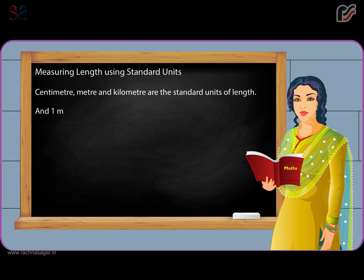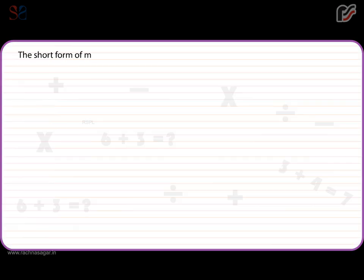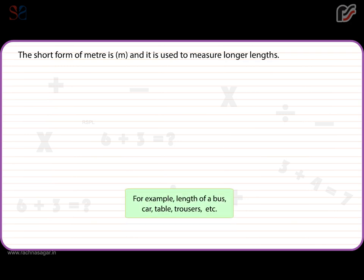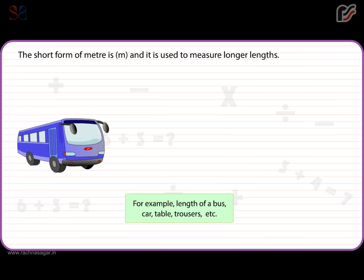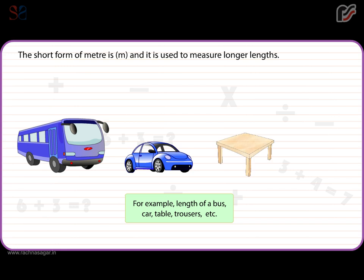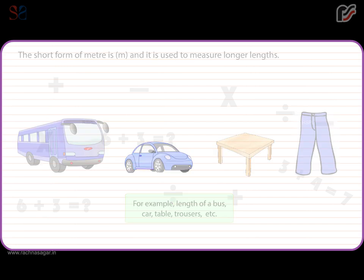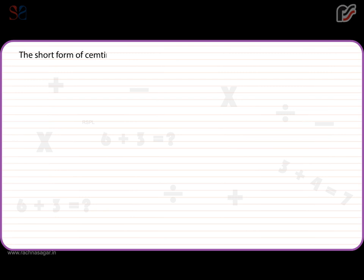1 meter is equal to 100 centimeters. The short form of meter is M, and it is used to measure longer lengths — for example, the length of a bus, car, table, trousers, etc. The short form of centimeter is CM, and it is used to measure small things.